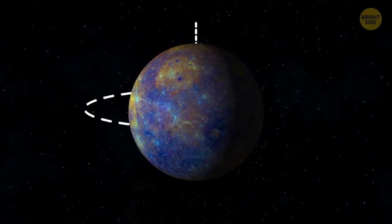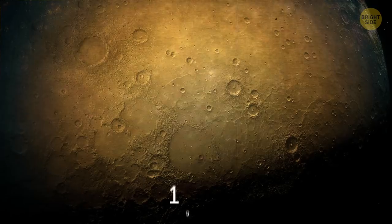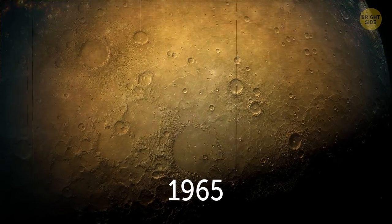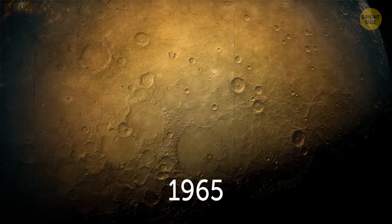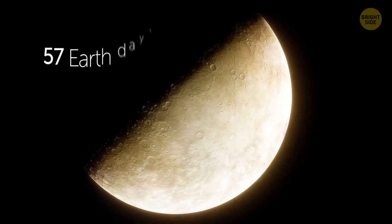Decades ago, astronomers believed that Mercury didn't rotate around its axis, and the same side of the planet always faced the Sun. It wasn't until 1965, when they discovered that it does actually rotate, but at a snail's pace. One rotation takes 57 Earth days.